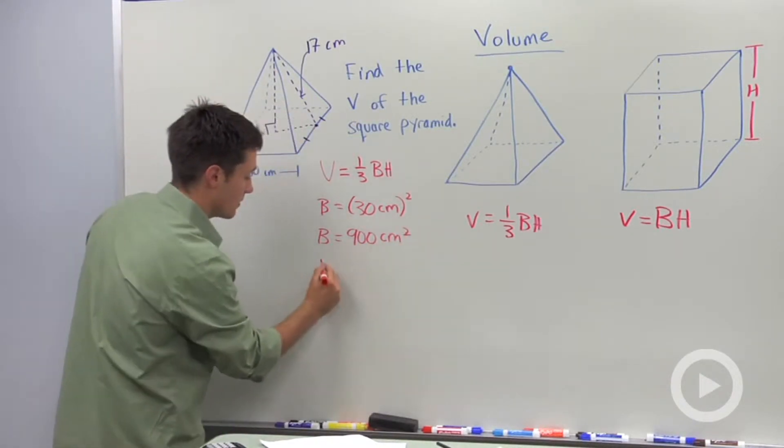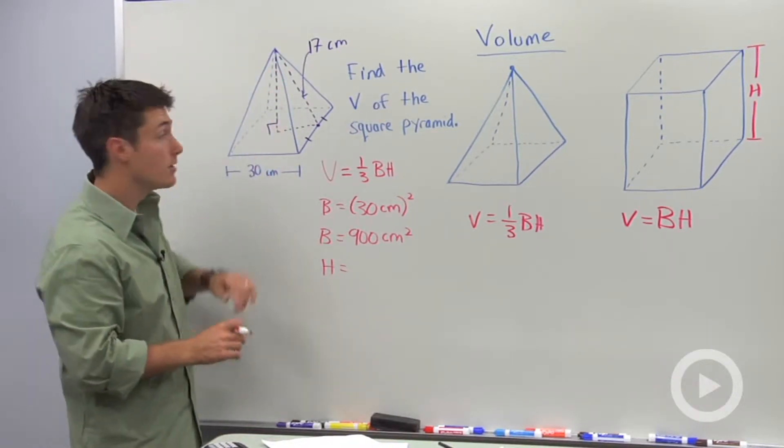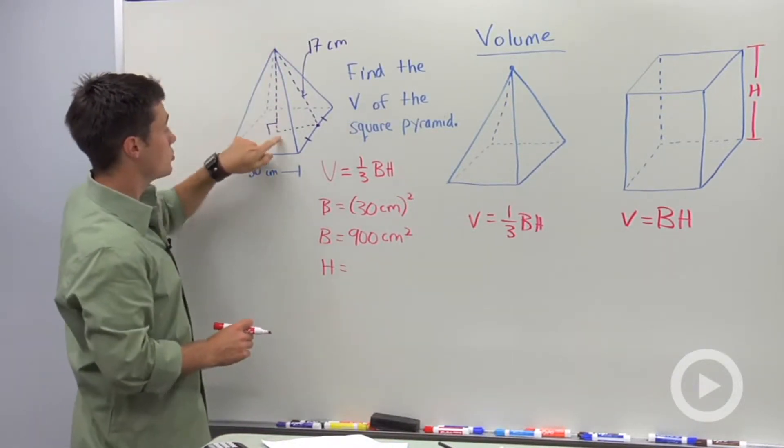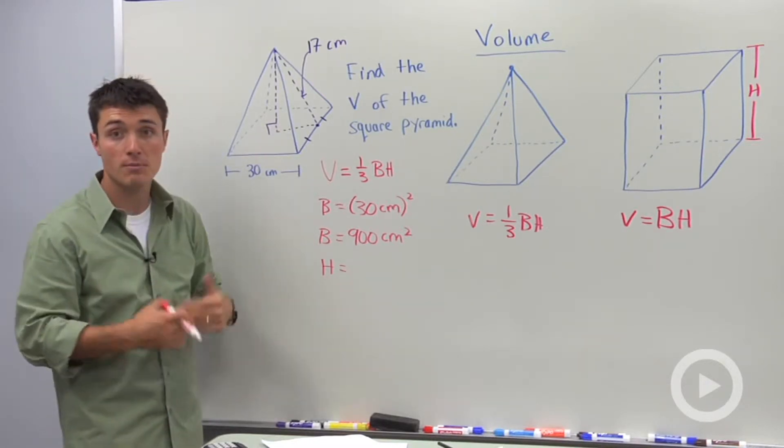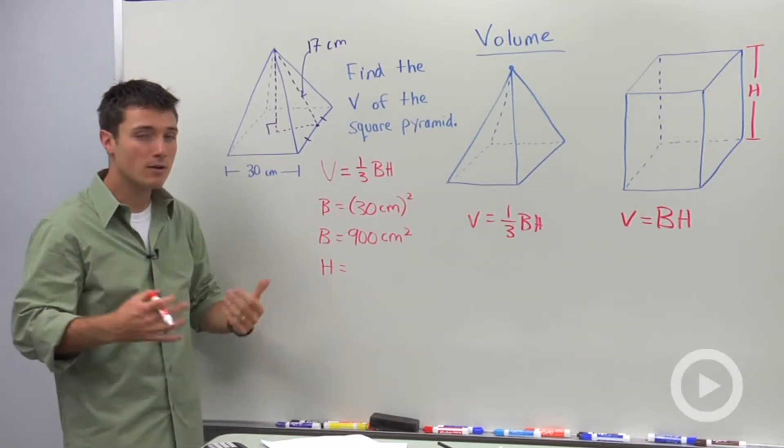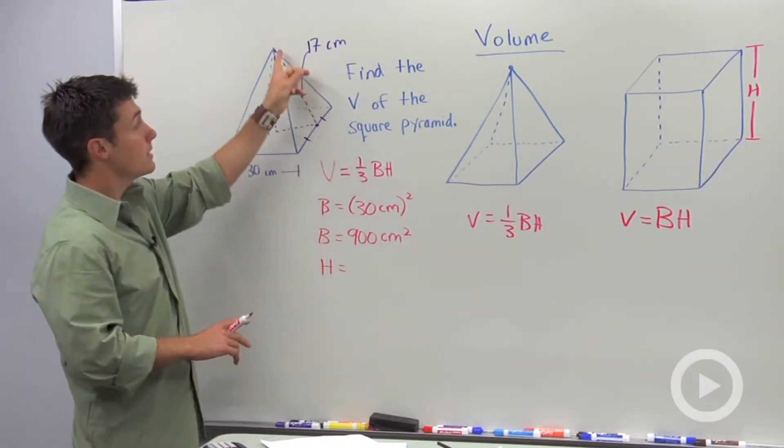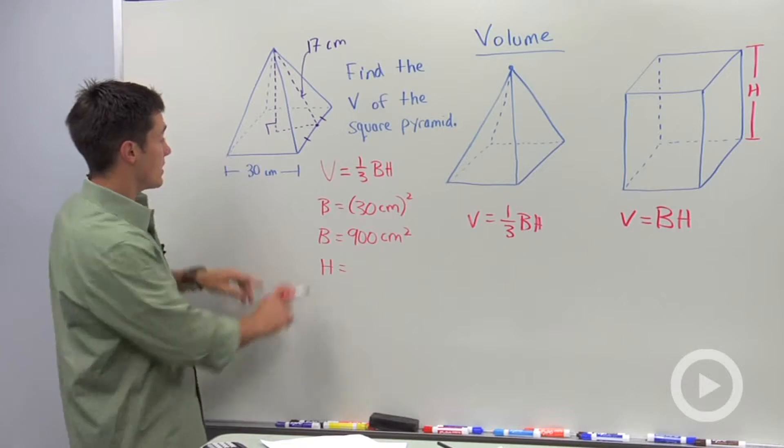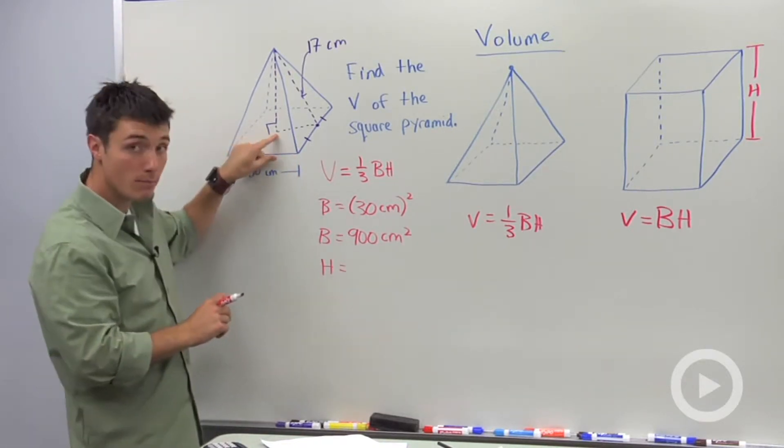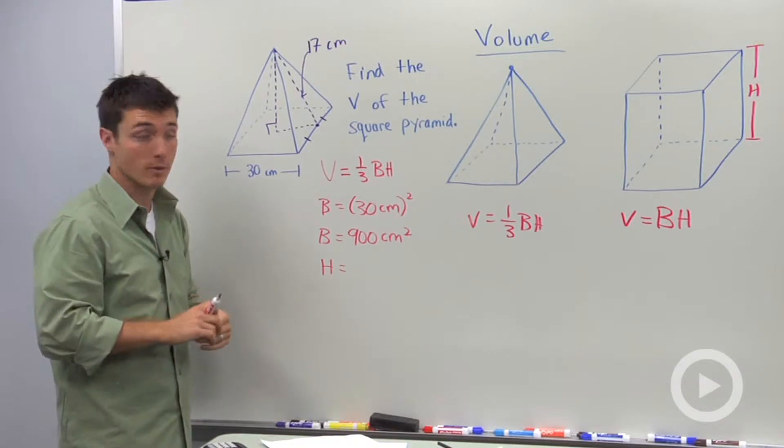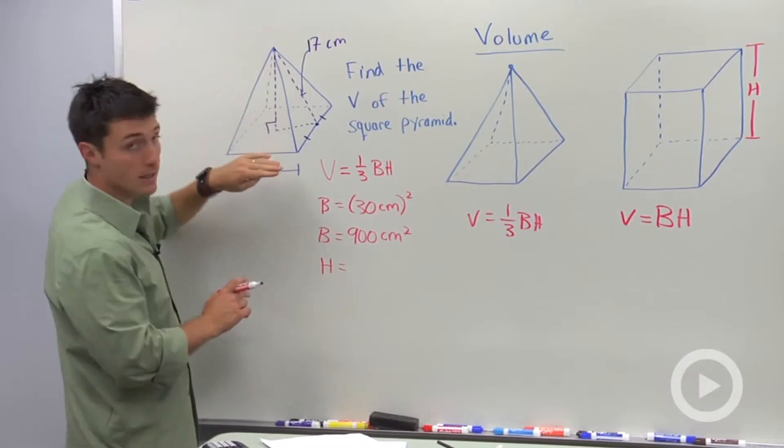So the missing piece here is our height, and our height is that perpendicular segment from the vertex to the base. The only way that I'm going to find that is to use the Pythagorean theorem. But how did I know to use that? Well, I saw right here that this slant height is 17 centimeters, and I saw that if this is 30 centimeters, then this must be the midpoint since we have a square right pyramid, and I can find this other missing side, which means I can find my height.